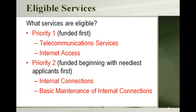There are two different levels of services broken into Priority 1 and Priority 2. Priority 1 is funded first with the $2.25 billion available, and after those are funded, if there's money left over, they go to Priority 2 services — starting with the neediest applicants first, meaning those eligible for the 90% discount. We're going to talk mainly today about Priority 1, the basic services. There are two Priority 1 services: telecommunications services and internet access. You can apply for one or the other or both.